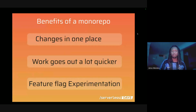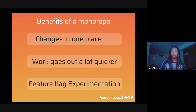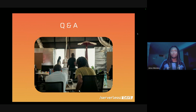To wrap up: what are the benefits of a monorepo? First, all our changes are in one place, which has dramatically reduced the amount of outages we cause our customers. Work goes out a lot quicker because changes are centralized. It's also given us the platform to run feature flag experimentation within various parts of our services and for various customers. That brings me to the end of the talk about how Triplo migrated away from the Serverless Framework to the CDK.